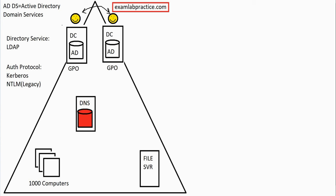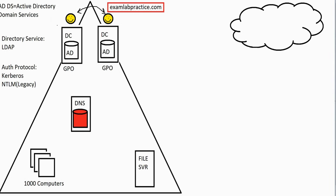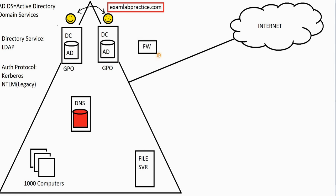Let's throw the internet into the mix. This cloud represents the internet. Maybe there's an internet connection coming in. You don't want to just leave your internal network exposed, so your company would generally have a firewall, providing a secure way for traffic to flow out to the internet. Only things we send out — or things we explicitly allow through — can come in. This is a traditional domain — the way we've done things for 20 years.